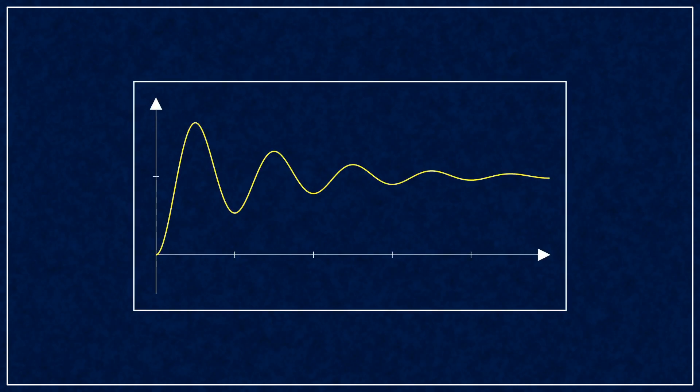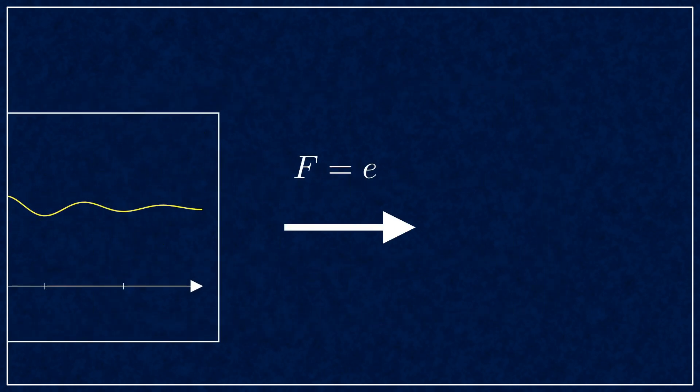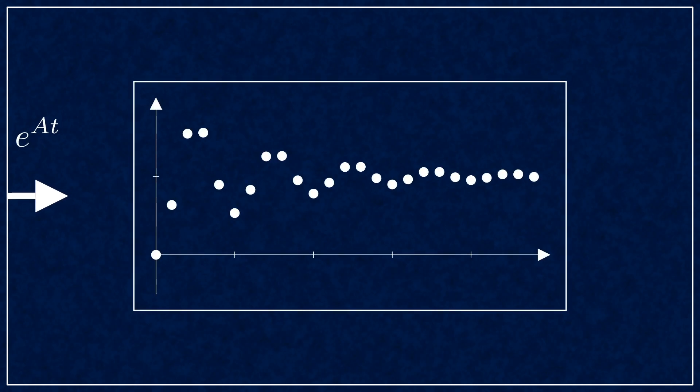Let's see how you get to the stability map. You start with your system description in continuous time, and discretize it. Now that you have your sampled system, you apply feedback control.